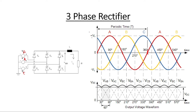Regarding conduction of the three-phase rectifier — how we get the output waveform — we get Vab, then Vac, then Vbc, Vba, and so on. This is basically called a six-pulse rectifier because we get six pulses in the interval of two-pi duration. We can see pulse one, two, three, four, five, and six — six pulses total in two-pi duration of output.